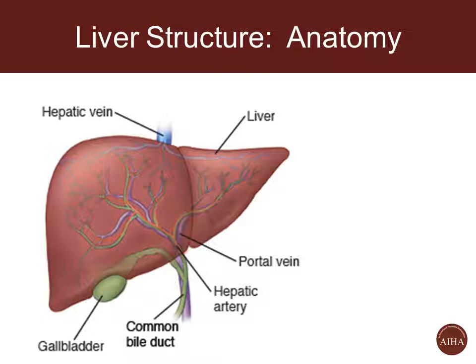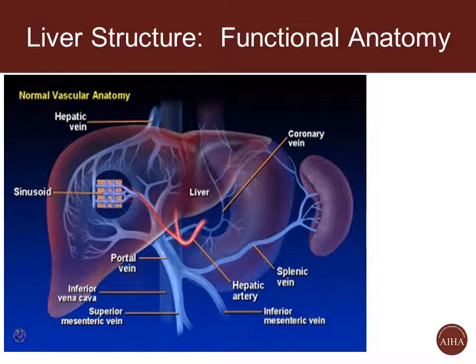Traditionally, the liver has been divided into two compartments: a left lobe and a right lobe. Classically, the left lobe is a fair bit smaller than the right. You'll see some of these other structures here on this slide, and I'll go over those in a little more detail.